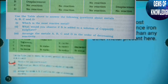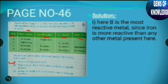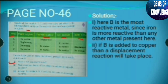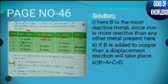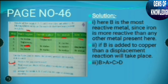Third sub-question: Arrange metals A, B, C, and D in order of decreasing reactivity. The answer is B > A > C > D. B is first because it shows displacement with iron sulfate (most reactive). Then A, which shows displacement with copper 2 sulfate. Then C, which shows displacement for silver nitrate. Then D, because there is no reaction in all cases. If you have any doubts, please comment below and I will help you.